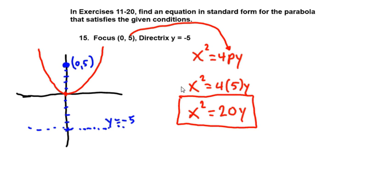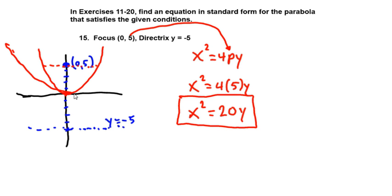The focal width of this parabola is 4p, which equals 20. That distance across at the focus is 20, making it a wide, flat, dish-shaped parabola.